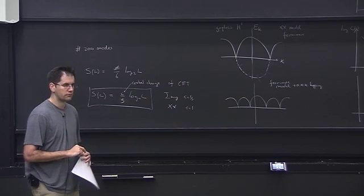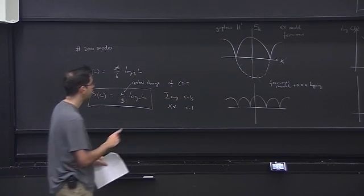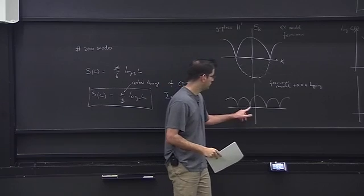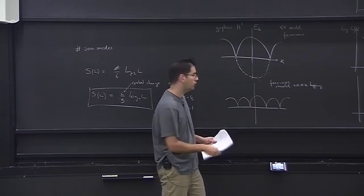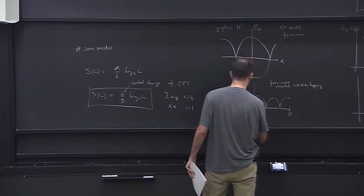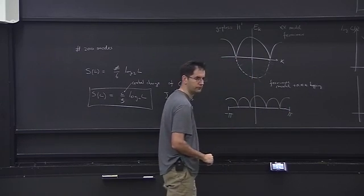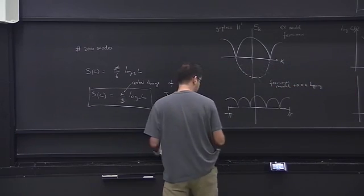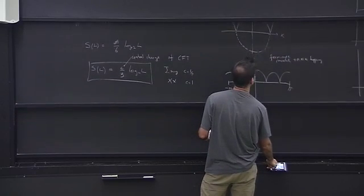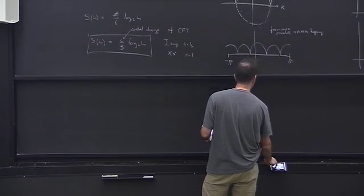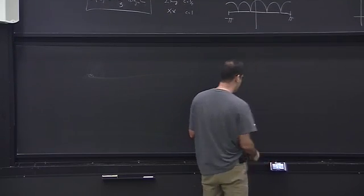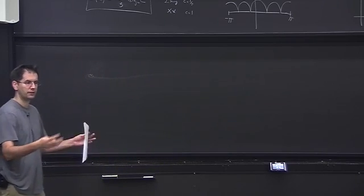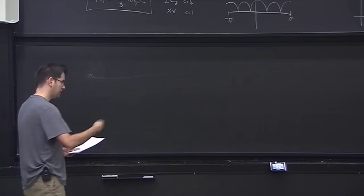Regarding counting zero modes in a discrete version: you look at how many times the dispersion curve touches zero, going only to k equals pi. The first important conclusion is that we can extract important information — universal properties of the system — just by looking at how entanglement scales. We'll see this happening many times.